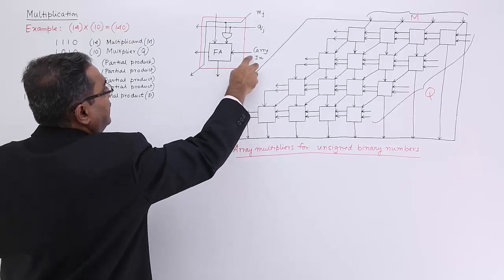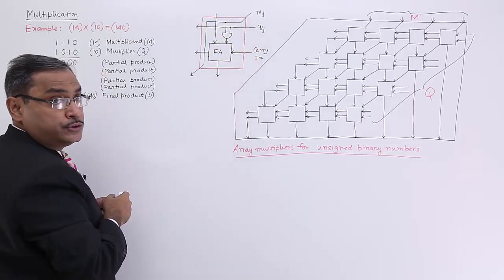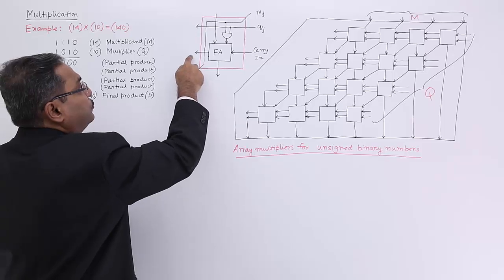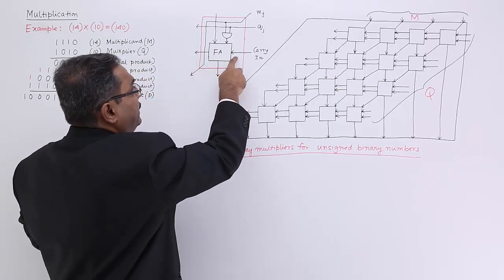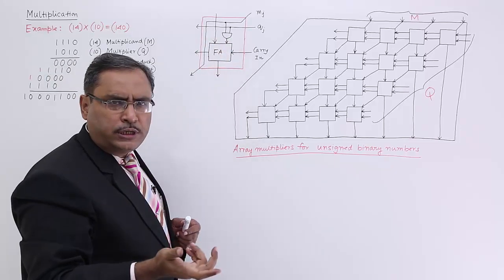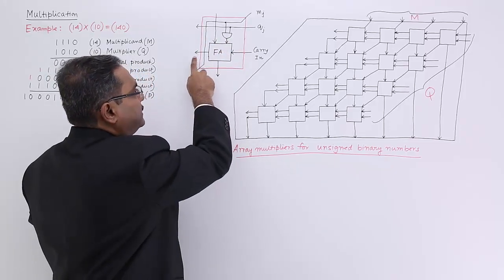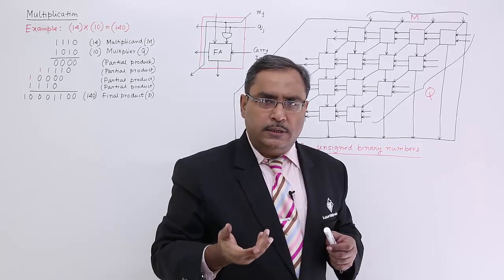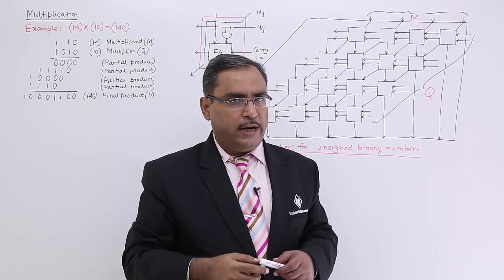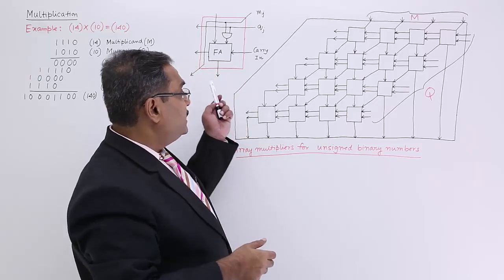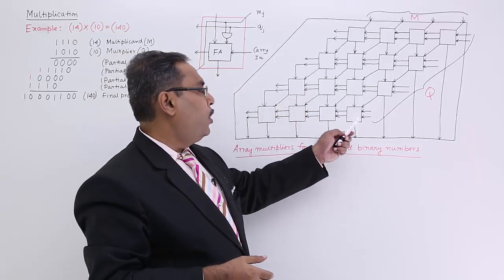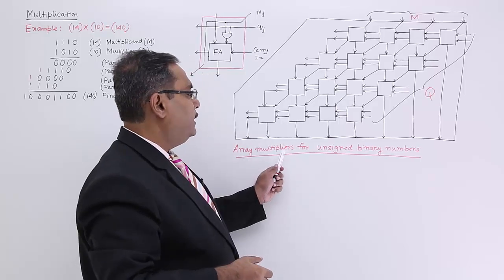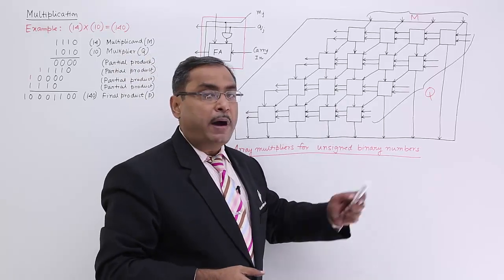So now this circuit, this full circuit is having 1, 2, 3, 4 inputs and 1, 2, 3, 4 outputs. This full adder is having 3 inputs, very much logical, and 2 output lines, very much logical, because full adder does have 3 input lines and 2 output lines. So this particular circuit has been used as a basic building block for array multipliers for unsigned binary numbers.